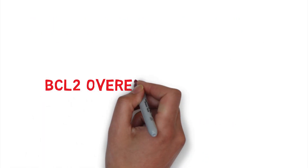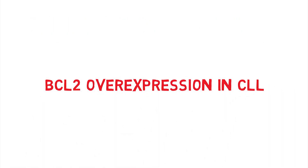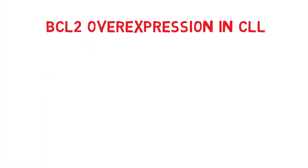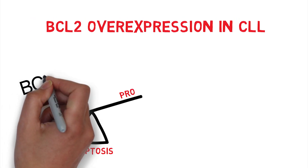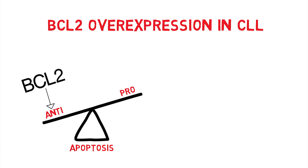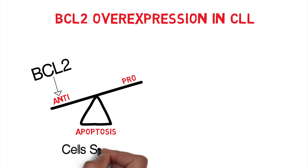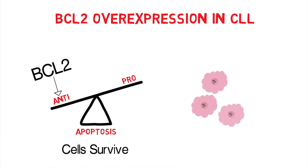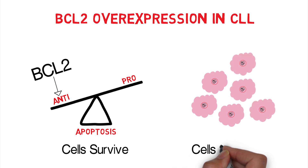In CLL, it is well known that BCL2 is overexpressed, thus tilting the balance in favor of survival. This leads to uncontrolled growth of malignant cells via inability to undergo apoptosis.